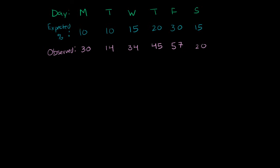I'm thinking about buying a restaurant. So I go and ask the current owner: what is the distribution of the number of customers you get each day? He says he's already figured that out, and he gives me this distribution — 10% of customers come in on Monday, 10% on Tuesday, 15% on Wednesday, and so on. They're closed on Sunday, so this adds up to 100% of their customers for a week. I'm a little suspicious, so I decide to see how well this distribution fits observed data by actually counting customers during the week.